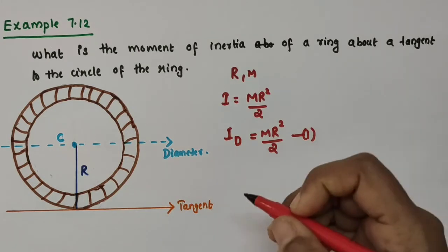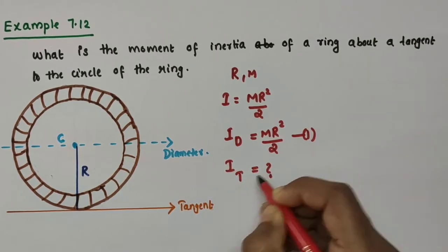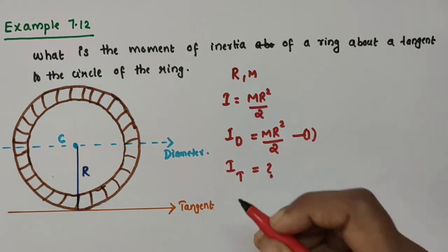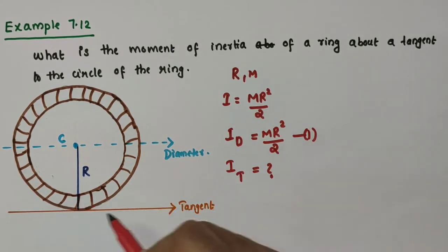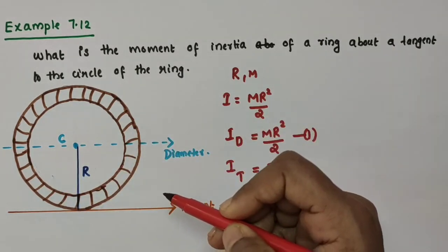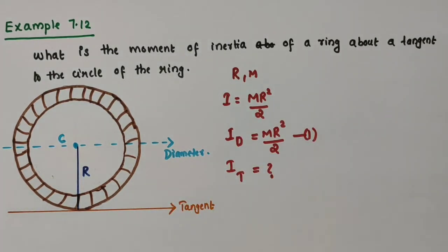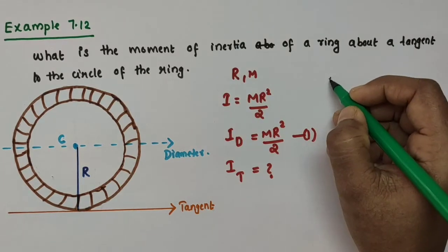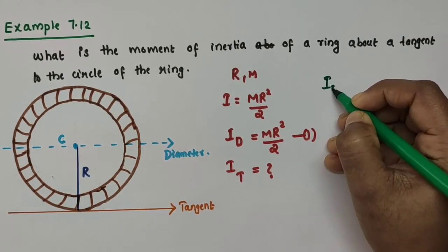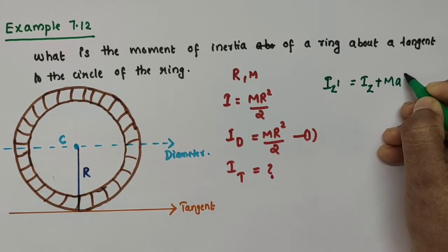We want to find the moment of inertia about the tangent, I_T. We have an axis along the tangent and an axis along the diameter — these two axes are parallel. So we can make use of the theorem of parallel axes. According to the theorem of parallel axes, which we have already discussed in a previous video, I_Z' = I_Z + MA².